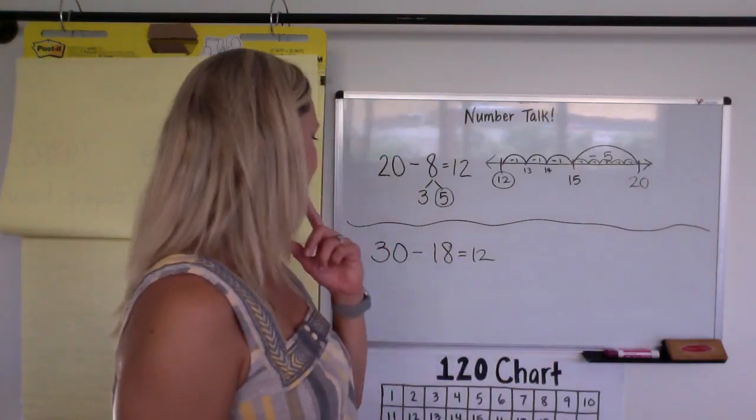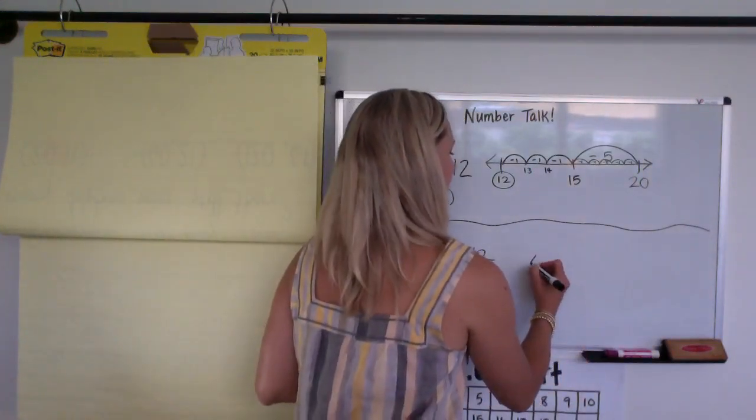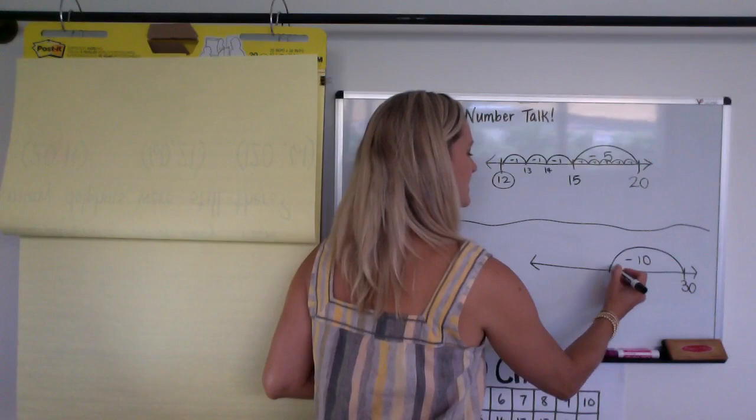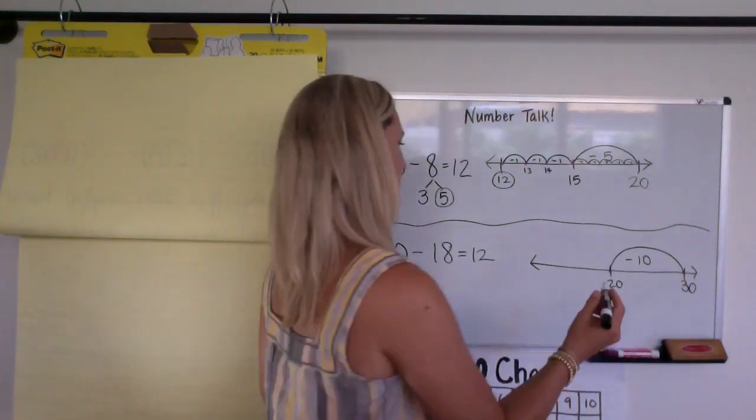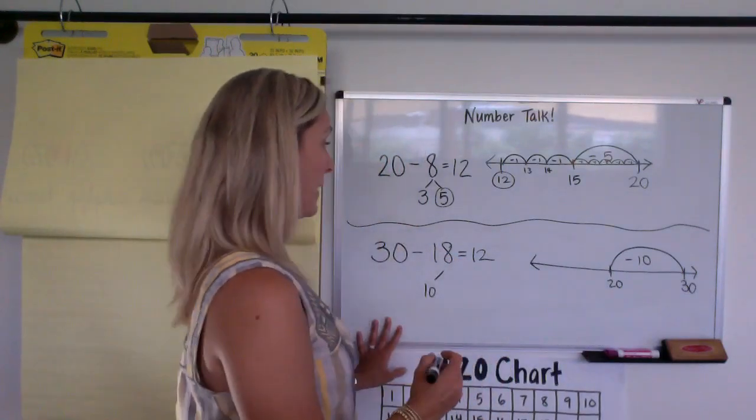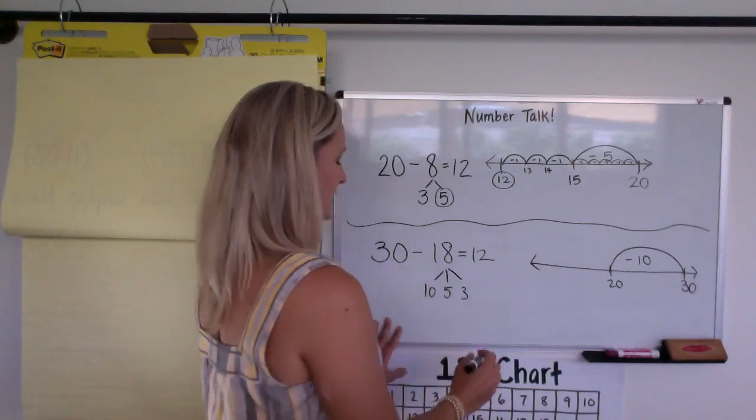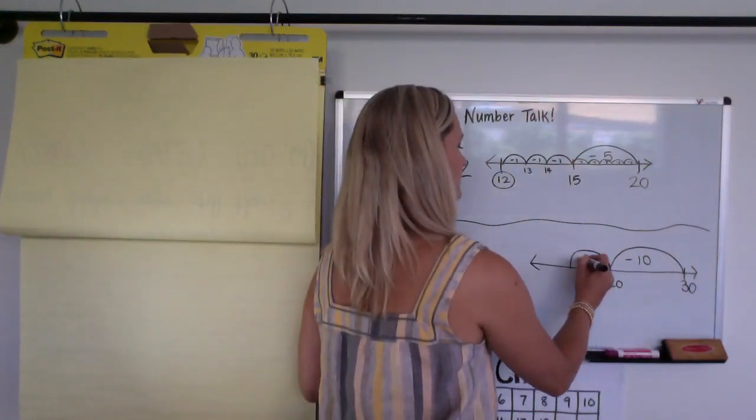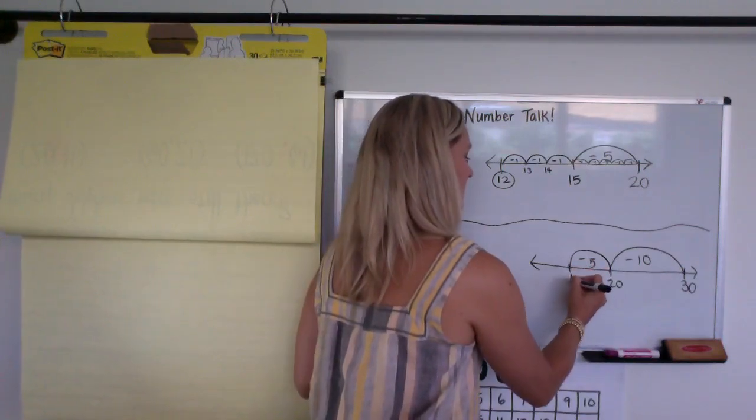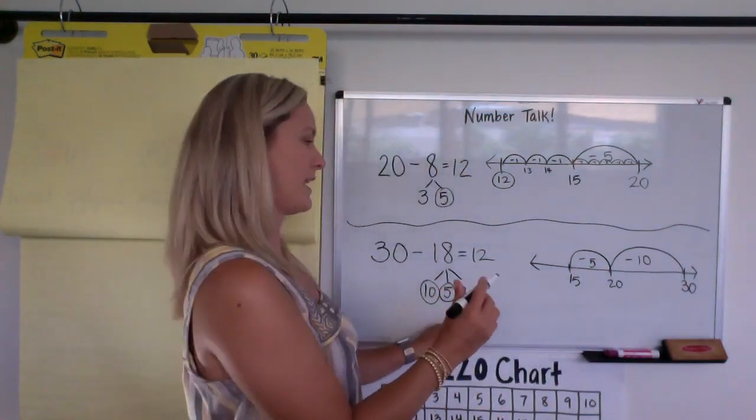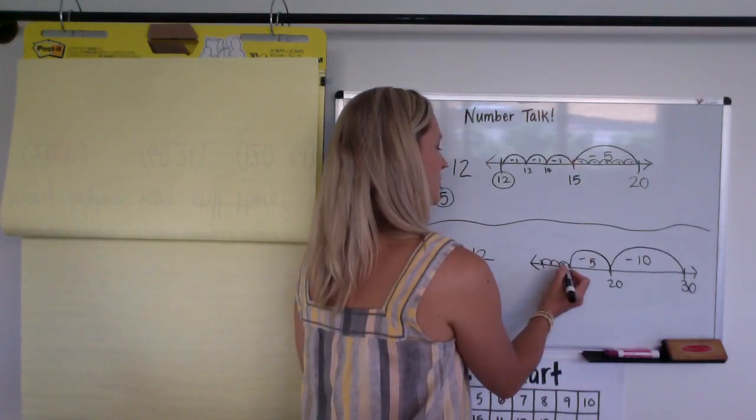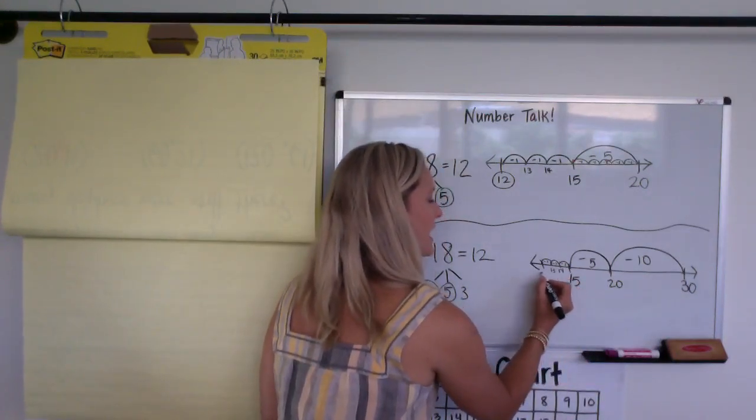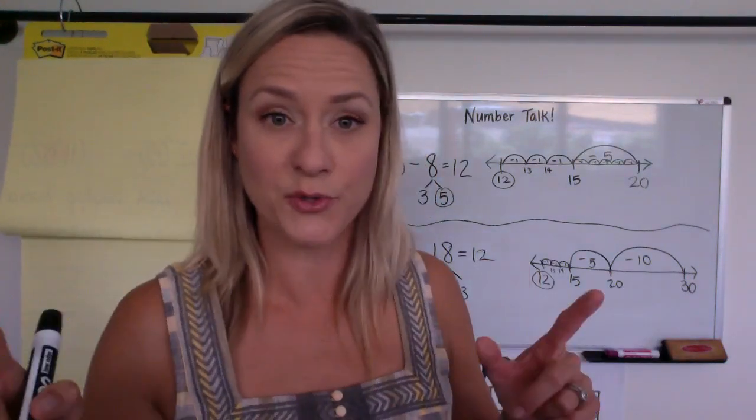Maybe you thought about it as 30 minus 10 is 20. So far I've taken off 10. Maybe then you did the 5 next and saved the 3 for last, kind of like last time. So we took off 10, and let's take off 5 now. So 20 minus 5 is 15. Took that one off. And then I'm going to take off 3: 1, 2, 3. So minus 1, minus 1, minus 1. 15, 14, woo! 13, and 12. There it is. So our answer is 12.